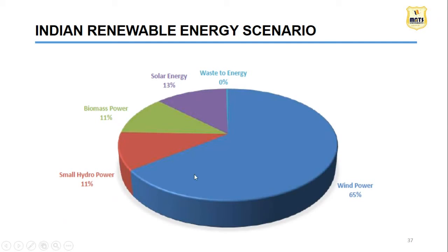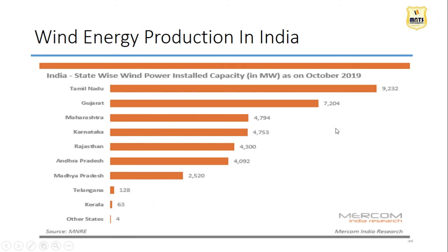India's renewable energy scenario: wind energy gives 65% of renewable energy generation, solar energy is 13% - though solar has increased significantly since 2016-17 with many solar plants established by governments of Gujarat, Chhattisgarh, and Maharashtra. There are also biomass power and small hydro power contributions. Statewise, Tamil Nadu is the highest wind-producing state, followed by Gujarat, Maharashtra, Karnataka, and Rajasthan. Research is ongoing to install small wind turbines in areas where we cannot use solar or thermal power.